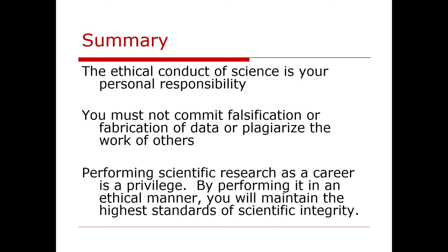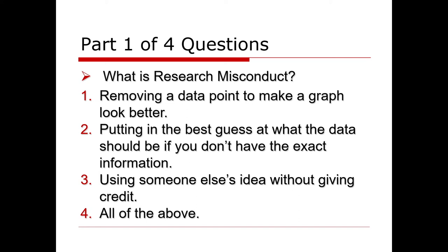Next, we're going to move to the questions. So this is the questions in part one. What is research misconduct? Is it removing a data point to make a graph look better? Is it putting in the best guess at what data should be if you don't have the exact information? Is it using somebody else's data without giving credit? Or is it all of the above? The correct answer is all of the above. Remember that science is truth. We're here to build upon the truth, and without a firm foundation, we can go in ways that are not consistent with knowledge and understanding. So it is important for us not to have scientific misconduct.